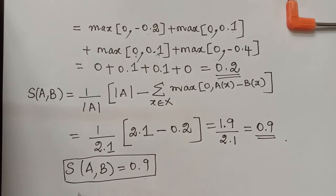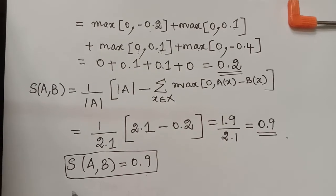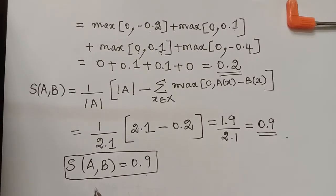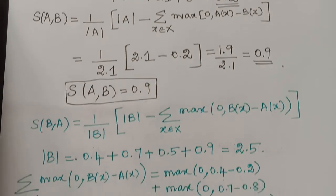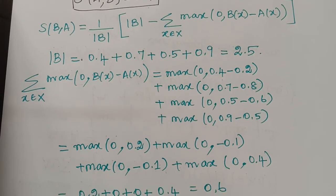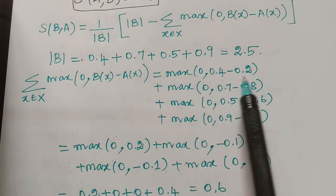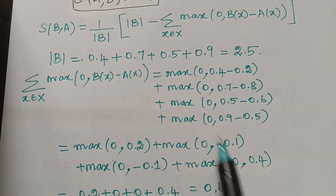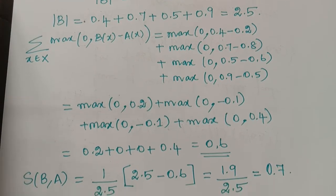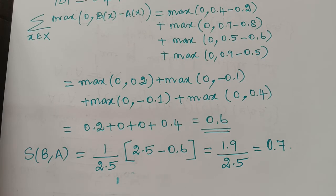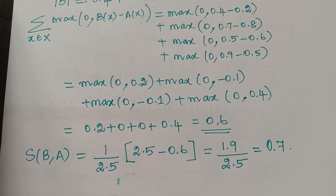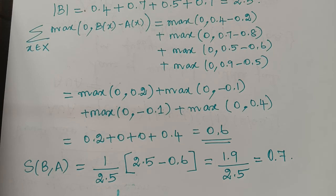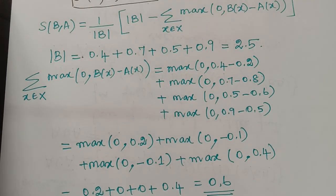In a similar way, we can evaluate the degree of subsethood of B in A, that is S(B,A). The cardinality of B is 2.5, the summation value equals 0.6, and after substituting we get the degree of subsethood of B in A as 0.7. Hope you have understood the concept of finding the degree of subsethood of two fuzzy subsets A and B. Thank you.